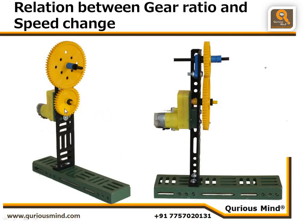Why does it change the speed? One tooth of the medium gear is going to push one tooth of the big gear. When the medium gear completes one full rotation, it only pushes half of the big gear's teeth, which means the big gear is not completing one full rotation. When the medium gear rotates twice, the big gear completes one rotation. So if the medium gear rotates at 60 RPM (the motor speed), the big gear rotates at around 30 RPM — and that's how the blades rotate slow.